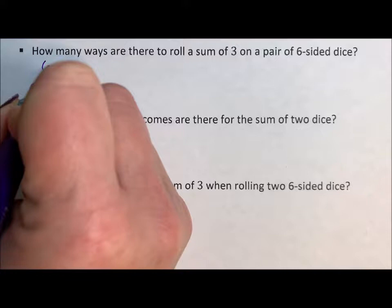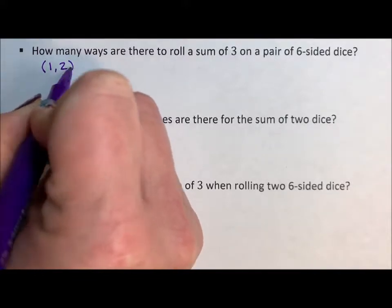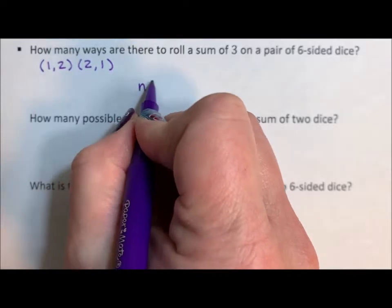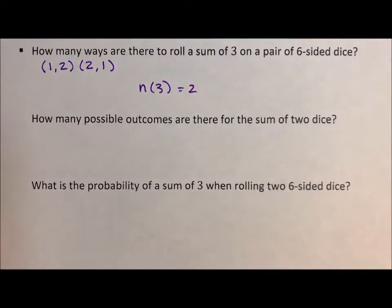So let's list it out. You can have a one on the first die with a two, a two on the first die with a one. All right, so the number of ways of rolling a three, two. There are exactly two ways.